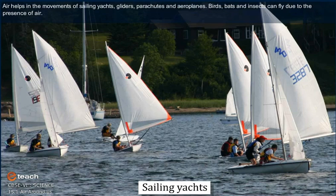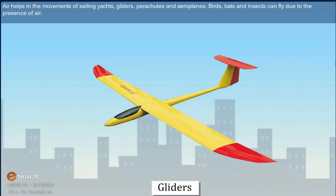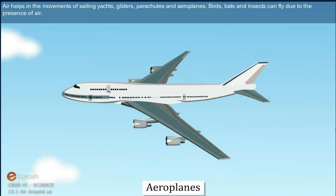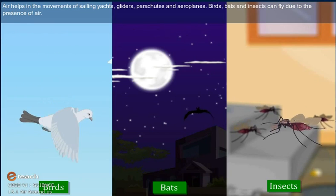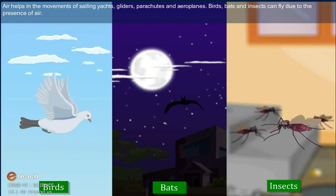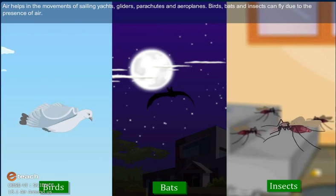Air helps in the movements of sailing yachts, gliders, parachutes, and airplanes. Birds, bats, and insects can fly due to the presence of air.